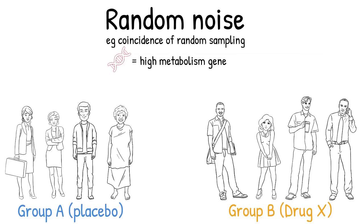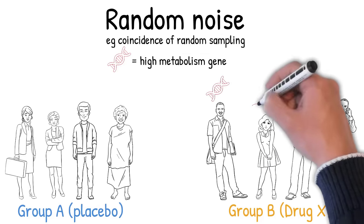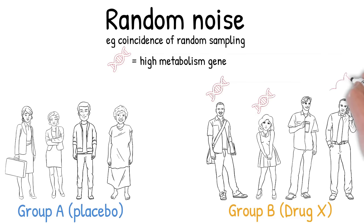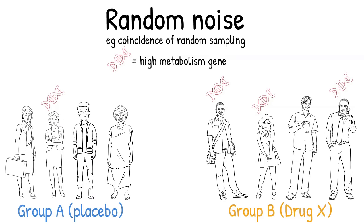Imagine a situation where, just by pure coincidence, more volunteers with a high metabolism gene are placed in group B compared with group A. So you can see that this scenario favours group B. Ultimately, you can see that just by pure coincidence of random sampling, this can have a knock-on effect on the p-value.